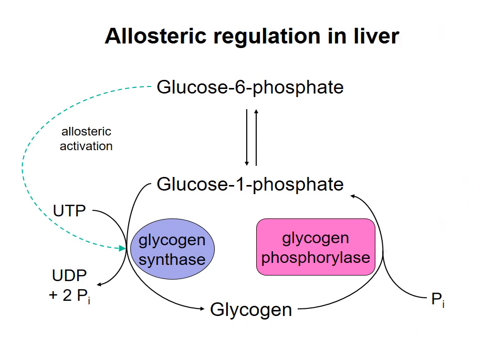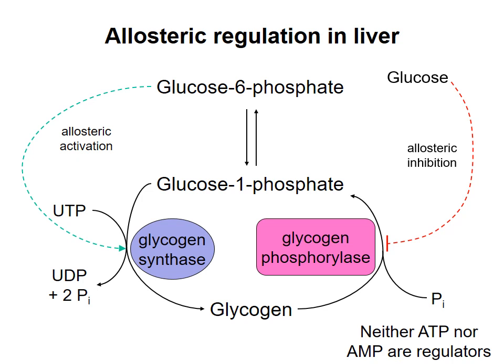As in muscle cells, the liver isoform of glycogen synthase is allosterically activated by G6P. Glycogen phosphorylase in liver is inhibited by glucose. This makes sense, because if there's a lot of glucose around, then the liver should synthesize glycogen, not break it down. But unlike in muscle cells, the liver enzymes are not allosterically regulated by ATP or AMP. This is because ATP and AMP are indicators of the energy status of the liver cell, and the liver does not break down glycogen for its own use. Therefore, a liver cell will not break down glycogen because of high AMP levels in that cell. The liver will restore its own energy levels in other ways, as we'll see in later topics.